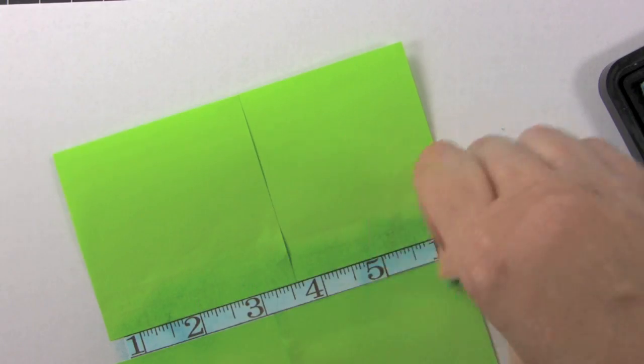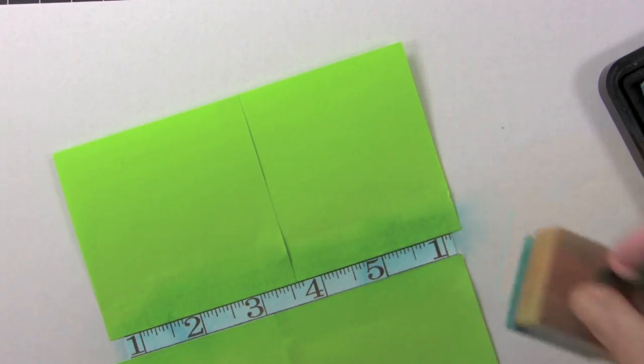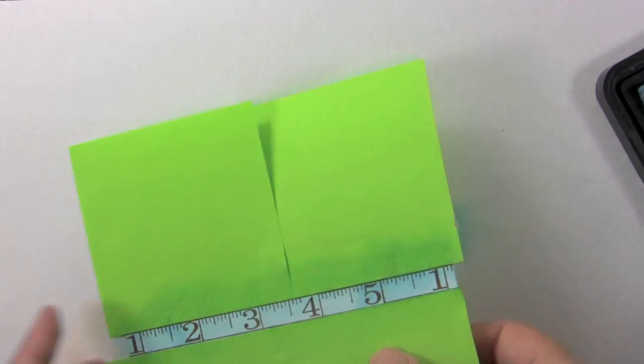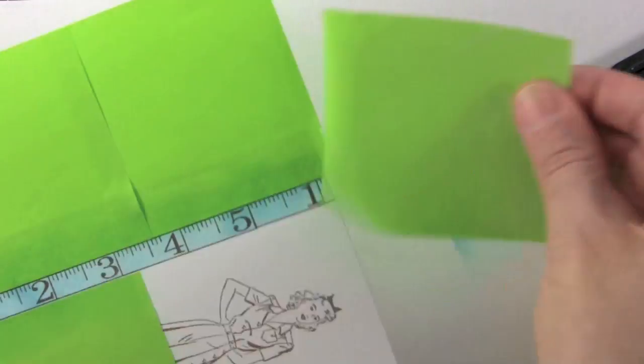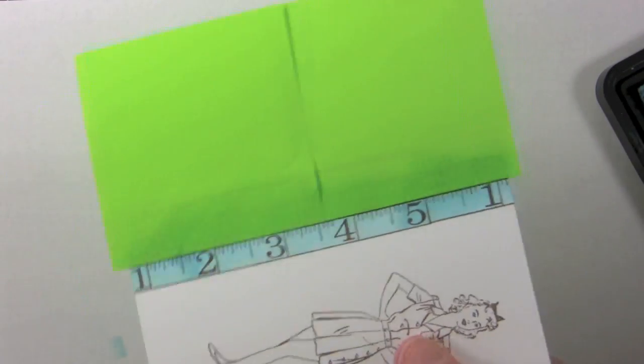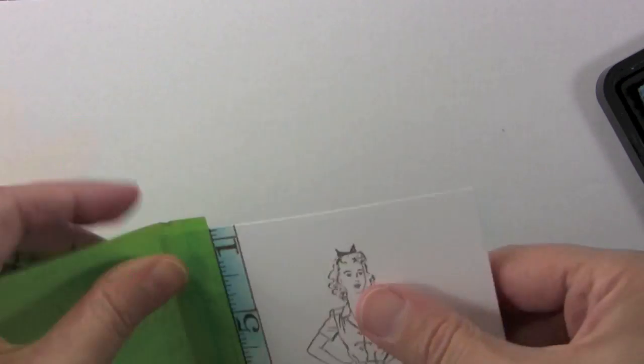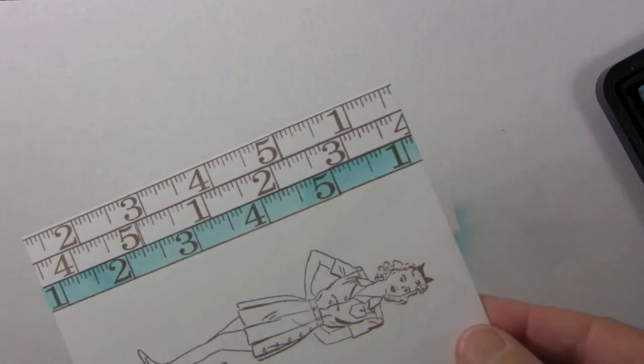And I like to make some areas darker and some areas lighter to kind of give it a distressed look. So then you can remove the post-it notes and see that just that part is blue.